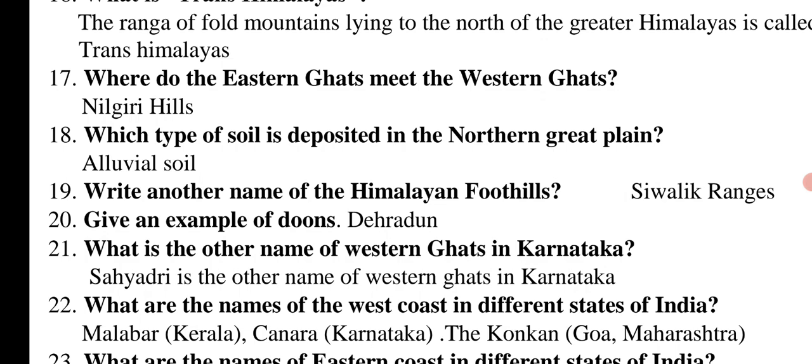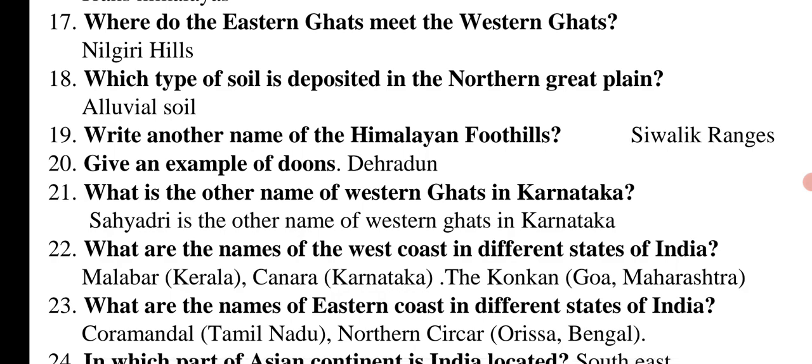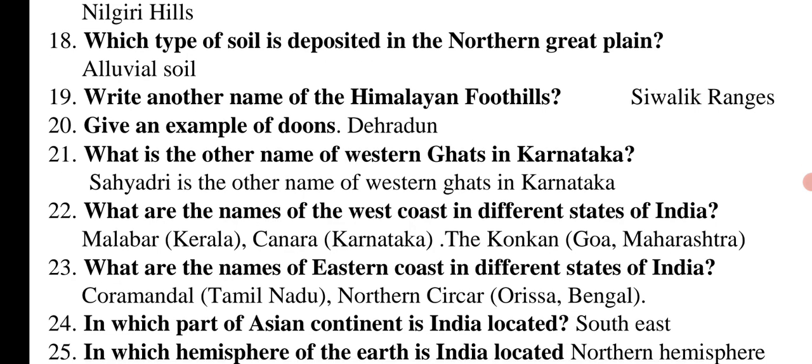Give an example of Doons: Dehradun. What is the other name of the Western Ghats in Karnataka? Right answer: Sahyadri. What are the names of the West Coast in different states of India? Malabar in Kerala, Canara in Karnataka, and Konkan in Goa and Maharashtra. What are the names of the Eastern Coast in different states of India? Coromandel in Tamil Nadu, Northern Circars in Odisha and Bengal.